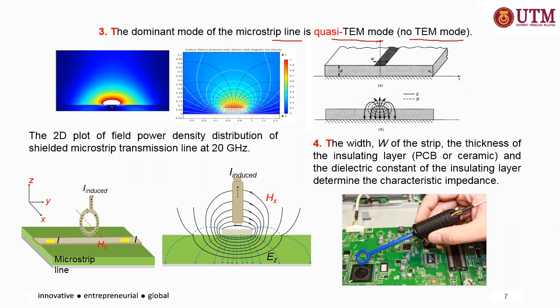The figures show a 2D plot of field power density distribution of a shielded microwave transmission line at 20 GHz. The size of the microstrip line — in terms of the width of the strip, the thickness of the insulating layer PCB or ceramic, and the dielectric constant of the dielectric — will affect the characteristic impedance of the microstrip line. We are going to discuss in detail the equations related to Z-naught in the next session.